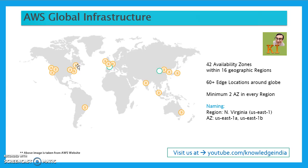The two availability zones within a region are isolated in terms of all supplies — whether it is air conditioning, cooling, or electricity. However, the two availability zones within a region are connected over a private high-speed network, which means data transfer between two availability zones within a region can be done privately without going over the public internet, and it can be done really fast.